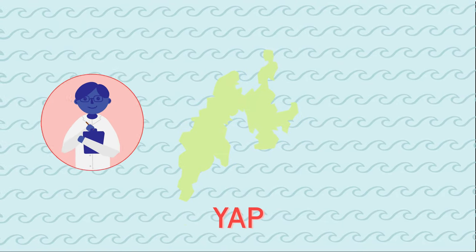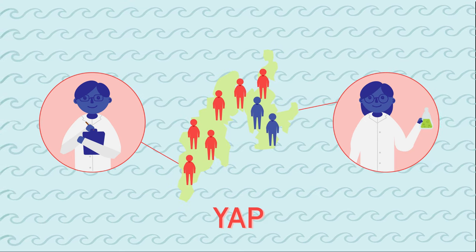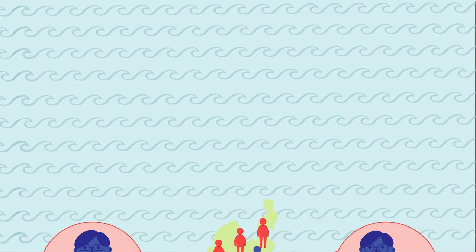The CDC conducted studies and collected samples and eventually determined that almost 75 percent of the population had Zika. A second epidemic occurred in 2013 in French Polynesia.